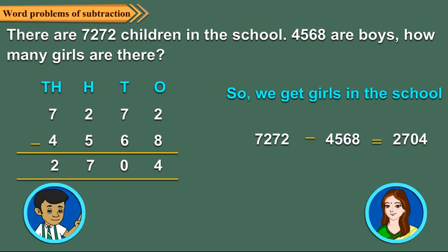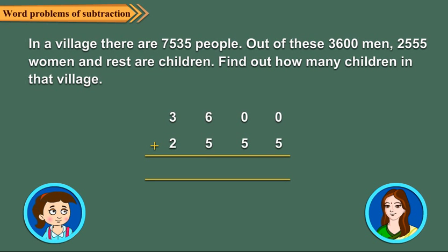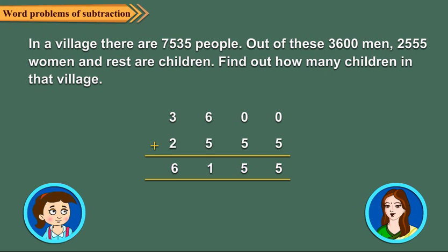Children, sometimes we come across situations where we need to add and subtract simultaneously. Let us take an example of this type. In a village, there are 7,535 people. Out of these, 3,600 are men, 2,555 are women, and the rest are children. Find out how many children are there in that village. So here, we first add 3,600 and 2,555, and to find out the number of children, we subtract the sum from the total number of people.